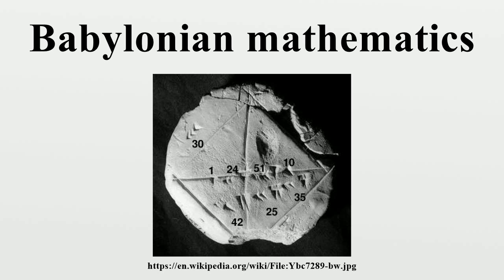The ancient Sumerians of Mesopotamia developed a complex system of metrology from 3000 BC. From 2600 BC onwards, the Sumerians wrote multiplication tables on clay tablets and dealt with geometrical exercises and division problems. The earliest traces of the Babylonian numerals also date back to this period. Most clay tablets that describe Babylonian mathematics belong to the Old Babylonian period, which is why the mathematics of Mesopotamia is commonly known as Babylonian mathematics. Some clay tablets contain mathematical lists and tables, others contain problems and work solutions.